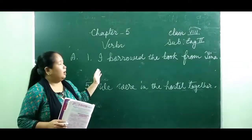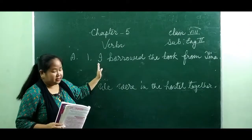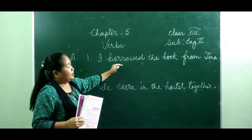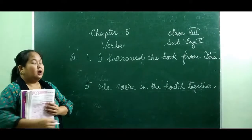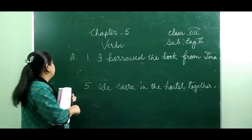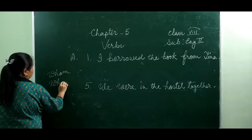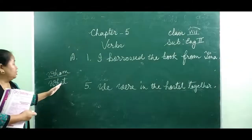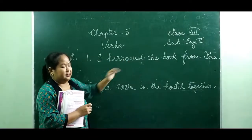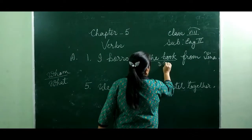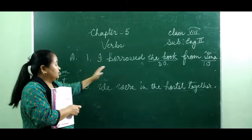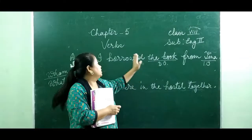Now let us learn some exercises from your book. We have learned what transitive and intransitive verbs are. In this exercise, you are asked to find whether the given verb is transitive or intransitive. To find this, first check whether an object is available in the sentence. To find an object, ask two question words: 'whom' for persons and 'what' for objects — and remember, the object always comes after the verb. For example: 'I borrowed what?' — the answer is 'the book.' This is the direct object. 'From Tina' is the indirect object. You find an answer after asking 'what' to the verb, meaning an object is available. So this verb 'borrowed' is a transitive verb.